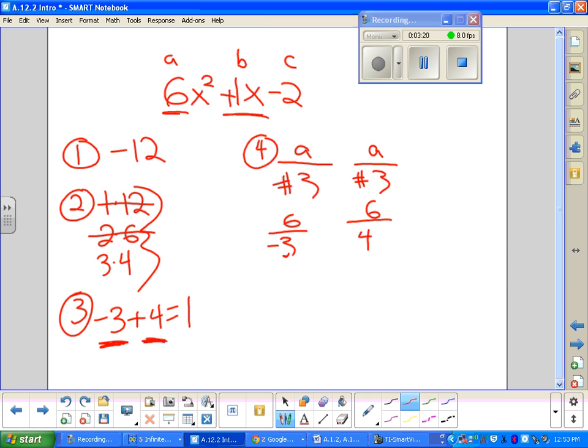All I have to do is reduce those fractions, but keep the negatives where they are. 6 divided by 3 is, would be 2 over negative 1. That's my first fraction. 6 over 4 is 3 divided by 2. So I have my two fractions.